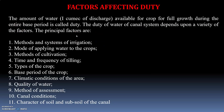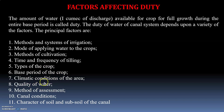The principal factors are: methods and systems of irrigation, mode of applying water to crops, methods of cultivation, time and frequency of tilling, types of crop, base period of the crop, climatic conditions of the area, quality of water, method of assessment, canal conditions, and character of soil and subsoil of the canal.